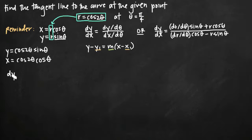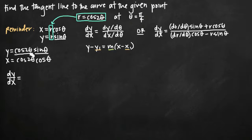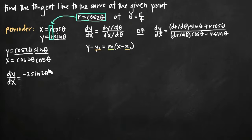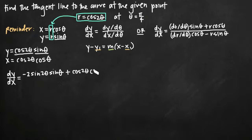For dy over dx, in the numerator we take the derivative of y with respect to theta. Using the product rule on cosine of 2 theta times sine of theta: the derivative of cosine of 2 theta is negative 2 sine of 2 theta — applying the chain rule — times sine of theta, plus cosine of 2 theta left alone times the derivative of sine of theta, which is cosine of theta.